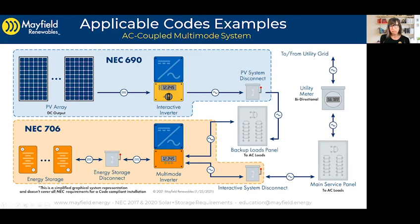The last thing to bring up is the voltage limitation. We need to keep in mind that DC circuits can't be over 100 volts DC on the DC side for a dwelling unit, unless they are not accessible during routine maintenance. We want to make sure we're considering that code requirement about DC voltage in our designs.